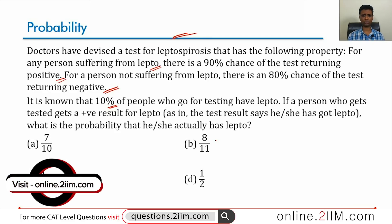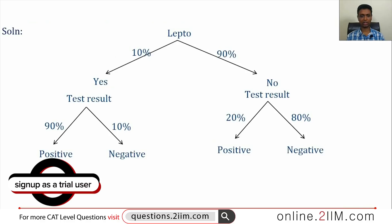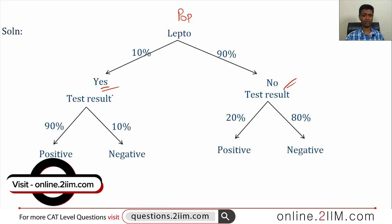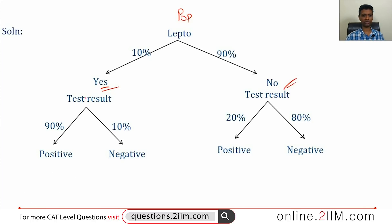This is a wonderful, fabulous question that can be modeled in many ways. I'm going to draw a simple tree structure and build from there. 10% of the population has lepto, 90% does not. If someone has lepto, there is a 90% chance the test result will be positive — it will say yes, the person has lepto.